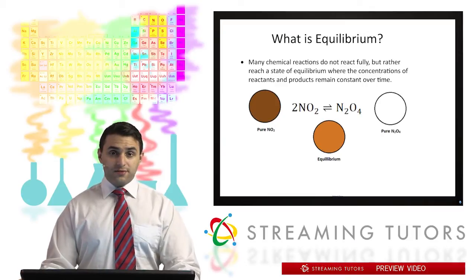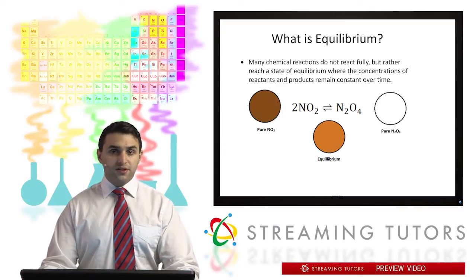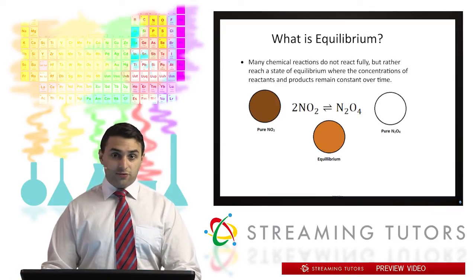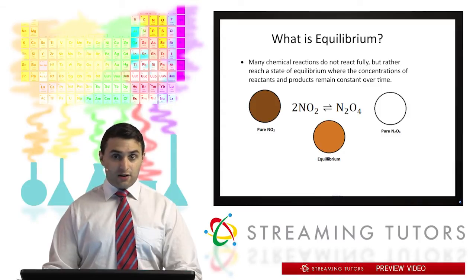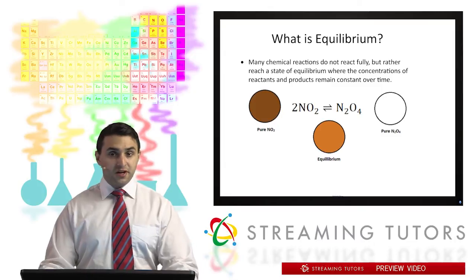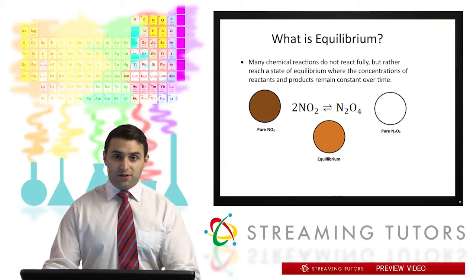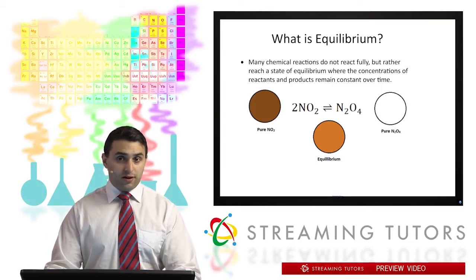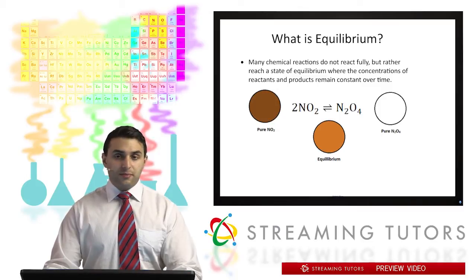In most of the reactions we talked about in General Chemistry 1, we assumed that the reaction went 100% to completion, meaning that all of the possible reactants were converted into products. What happens in many reactions, however, is that a reaction will only go part of the way. So that's what I mean by equilibrium.